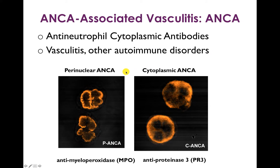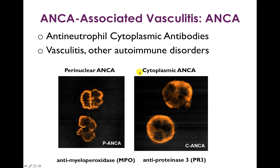There's perinuclear ANCA — you can see on immunofluorescence this sort of linear perinuclear illumination — and cytoplasmic ANCA, where the cytoplasm of neutrophils is what's fluorescing.